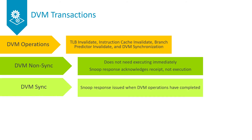DVM syncs work in a similar way to those in ACE, in that they check all previously issued DVM operations have been completed. The difference with them in CHI is that fewer completions are required in the process. One thing to note is that ARM cores generate DVM syncs as a result of a DSB instruction. However, implementations may choose to issue DVM syncs as a result of a DSB only if a DVM operation has previously been issued.